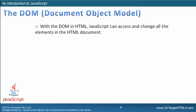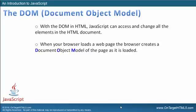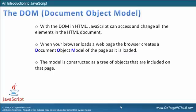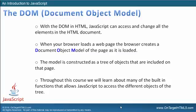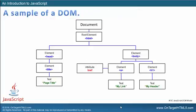With the DOM and HTML, JavaScript can access and change all the elements in the HTML document. When your browser loads a web page, the browser creates what's called the Document Object Model of the page as it's loaded. The model is constructed as a tree of objects that are included on the page. Throughout this course, we'll learn about many of the built-in functions that allow JavaScript to access the different objects of that tree.